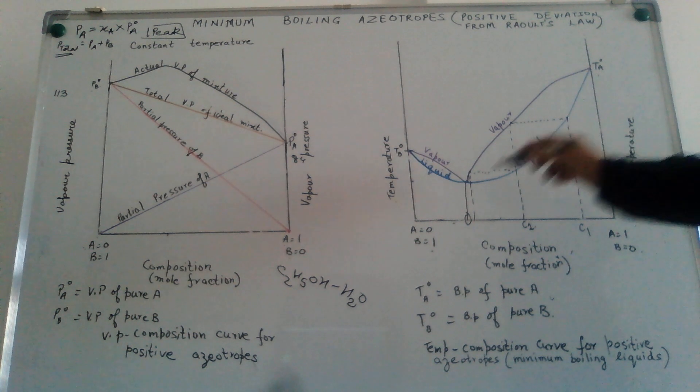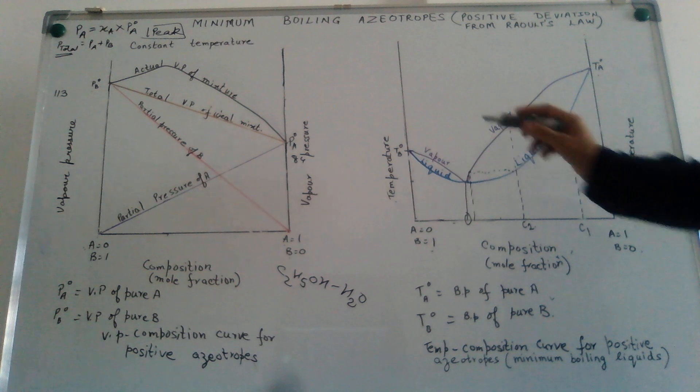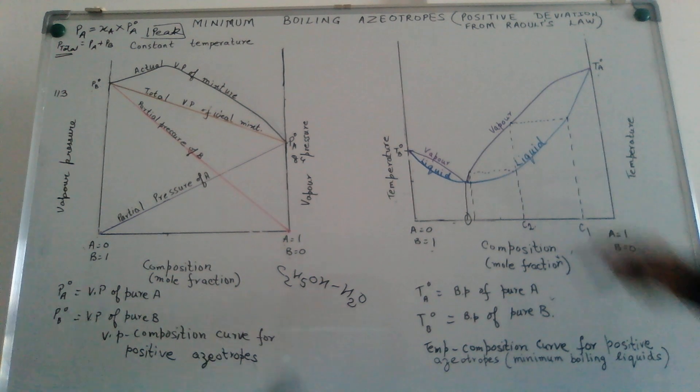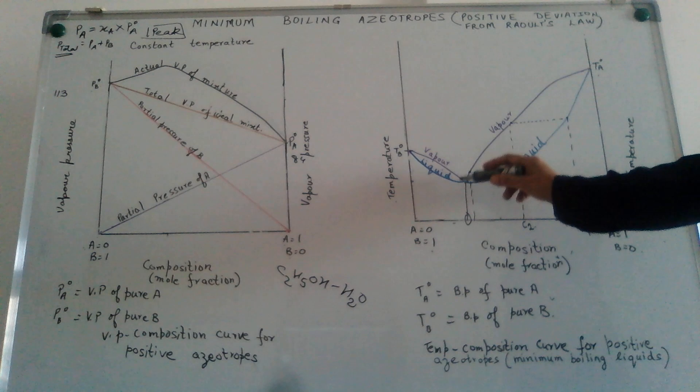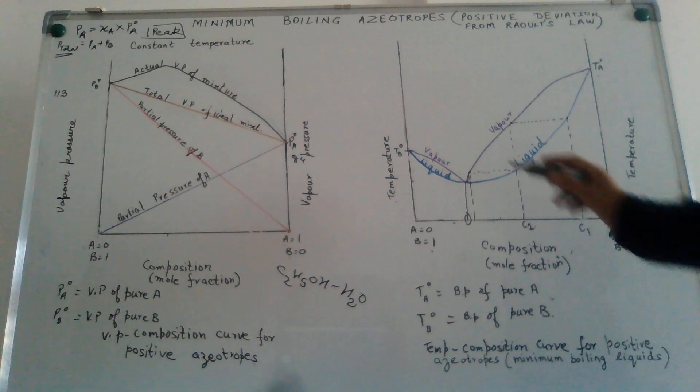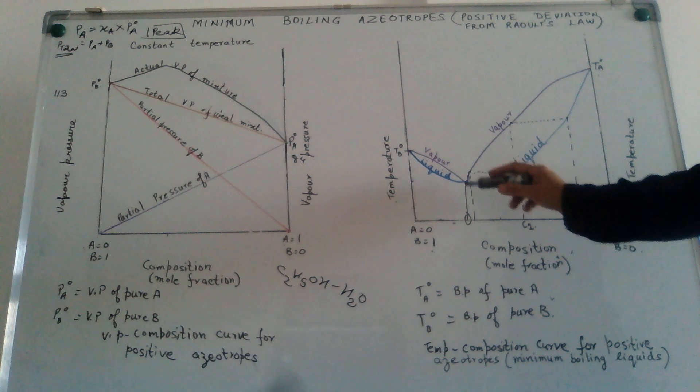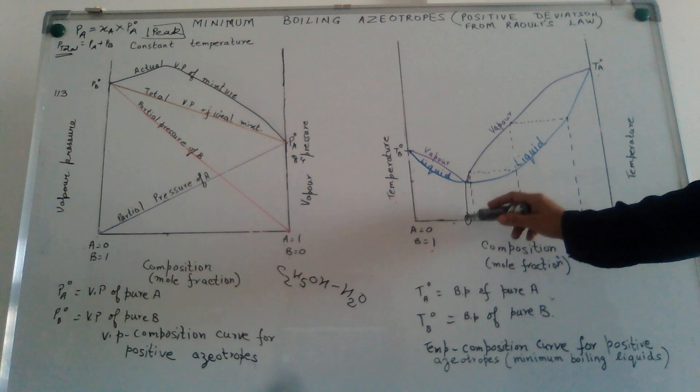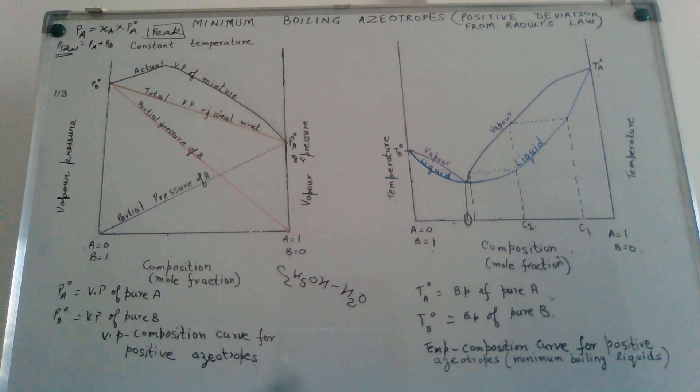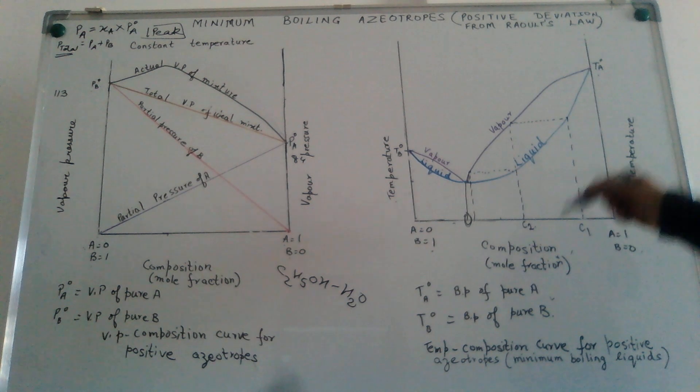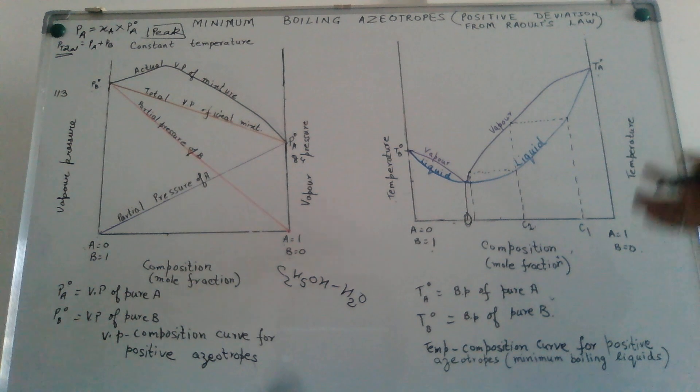So, now we will have A and B vaporizing together. We will not be able to separate till the time the composition corresponds to this point in the curve. Hence, a complete separation of these type of liquid mixtures is not possible.